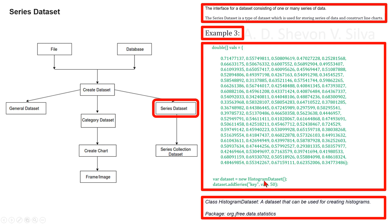The class HistogramDataset is a dataset that can be used for creating histograms. This is in package org.jfree.data.statistics. The method public void addSeries(Comparable key, double[] values, int bins) adds a series to the dataset using the specified number of bins and sends a dataset change event to all registered listeners.